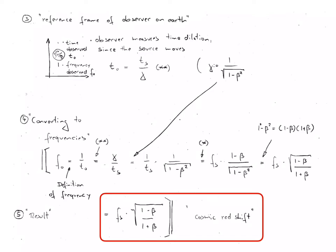Now, substituting for gamma with 1 over the square root of 1 minus beta squared, and finally, substituting with the star equation from the previous slide, we obtain that the observed frequency is equal to the proper frequency fs times 1 minus beta divided by the square root of 1 minus beta squared.